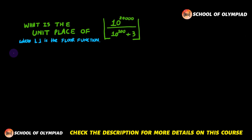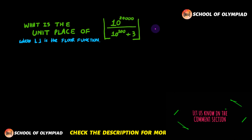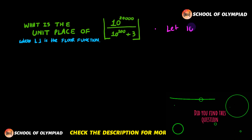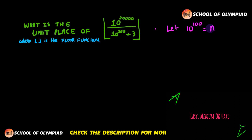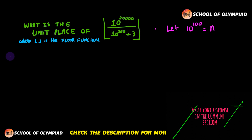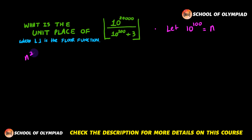Alright, let us get started with the solution. First of all, what we are going to do is suppose 10 raised to the power 100 is equal to some quantity — let us call it n. Then this expression will become the floor function of n raised to the power 200 divided by n plus 3.